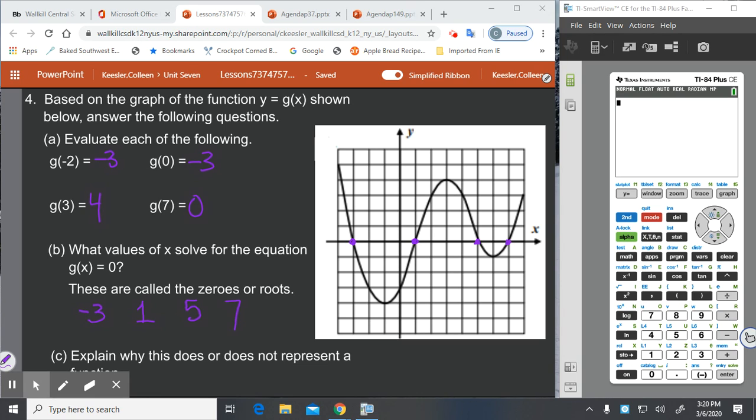Explain why this does or does not represent a function. And this is a function. Because it passes the vertical line test. And each element of the domain is only paired with one element of the range.